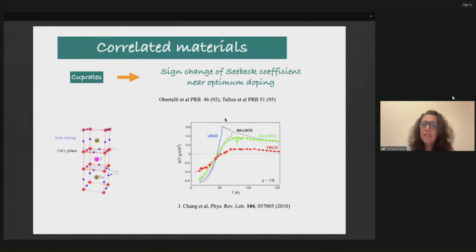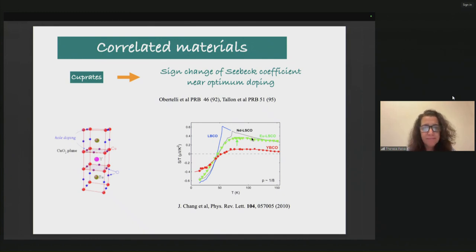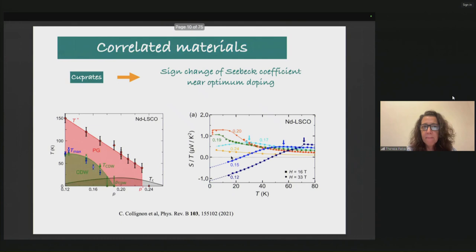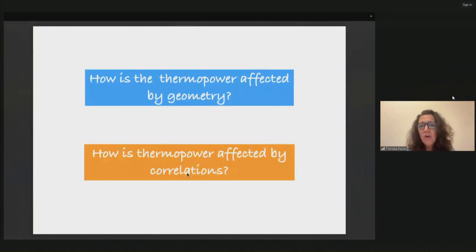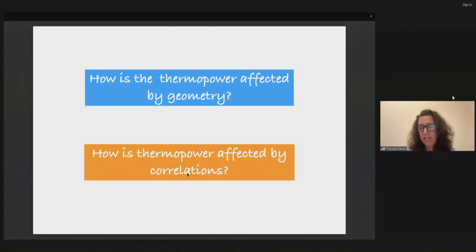In the cuprates, some interesting effects have been observed, including a sign change of the Seebeck coefficient that happens at different temperatures depending on the doping, and it appears in different materials. So the main questions we want to answer are: how is the thermal power affected by geometry, and how is the thermal power affected by correlations?